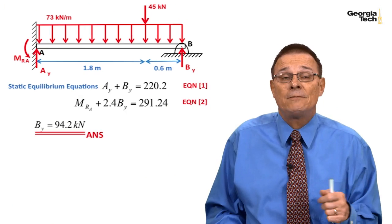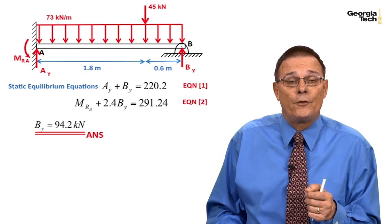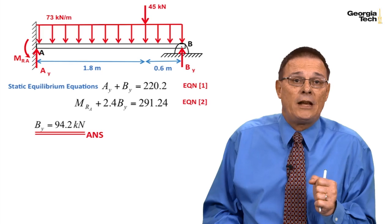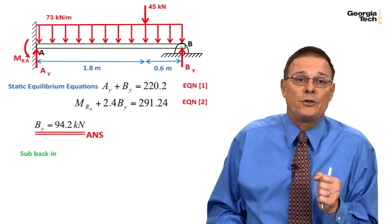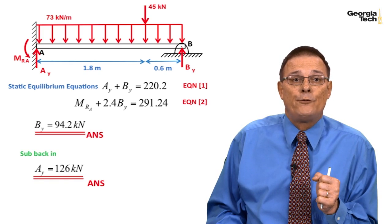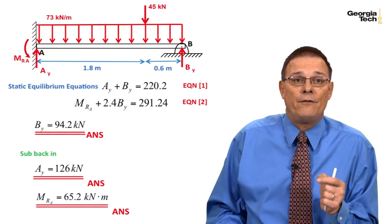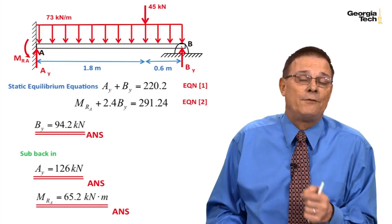Once I have that, it's quite straightforward to solve for the other two unknowns. I go back to my static equilibrium equations, substitute back in, I can find the value for A_Y, and I can find the value for the moment reaction at the left-hand side.